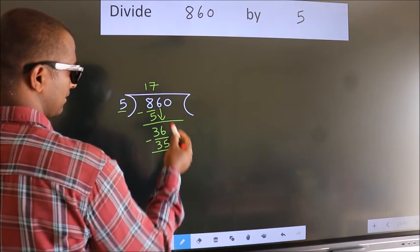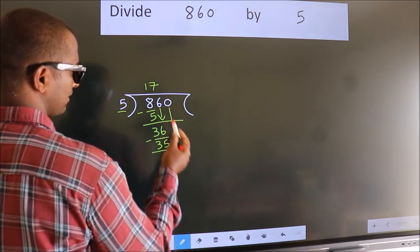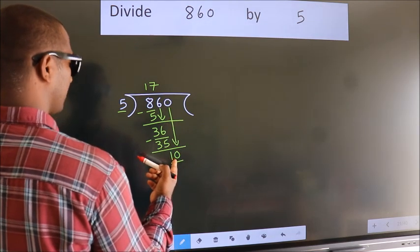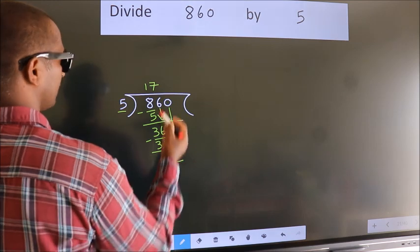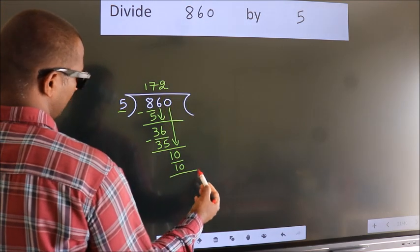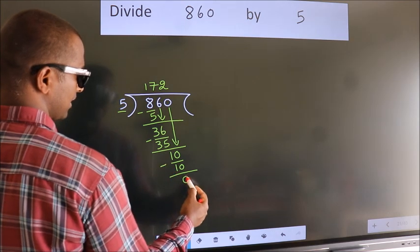After this, bring down the beside number. So, 0 down. So, 10. When do we get 10? In 5 table. 5 2s 10. Now, we subtract. We get 0.